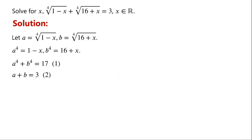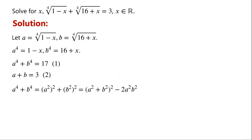There are different ways to solve for a and b. We will use a simpler approach. We know that a⁴ plus b⁴ can be written as (a²)² plus (b²)², which equals (a² plus b²)² minus 2a²b². And a² plus b² equals (a plus b)² minus 2ab. We have a⁴ plus b⁴ equals 17, and a plus b equals 3.